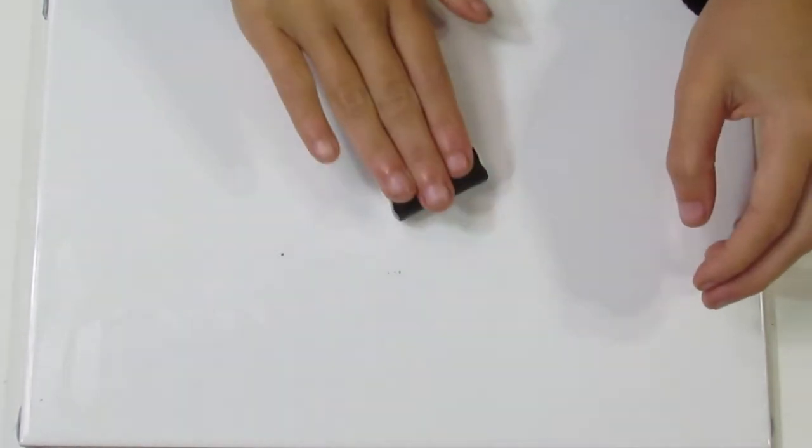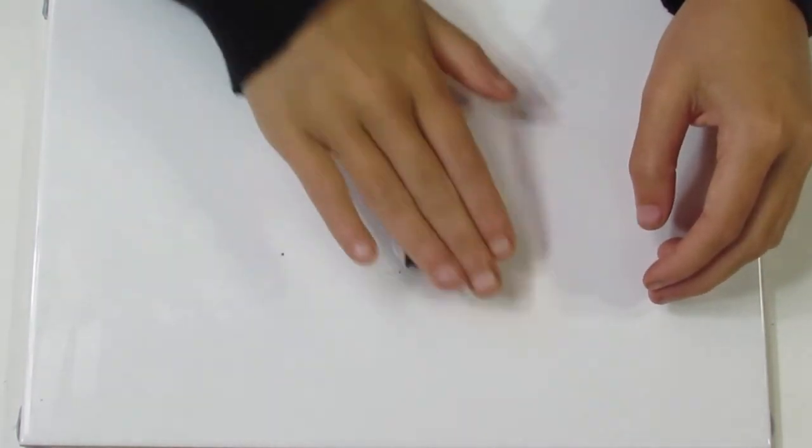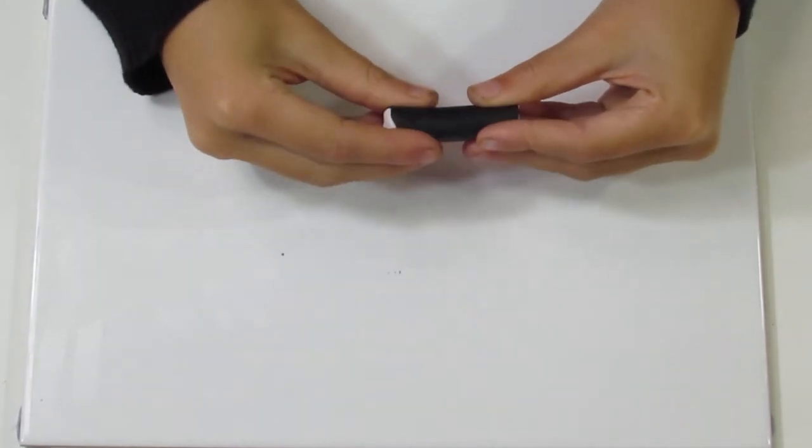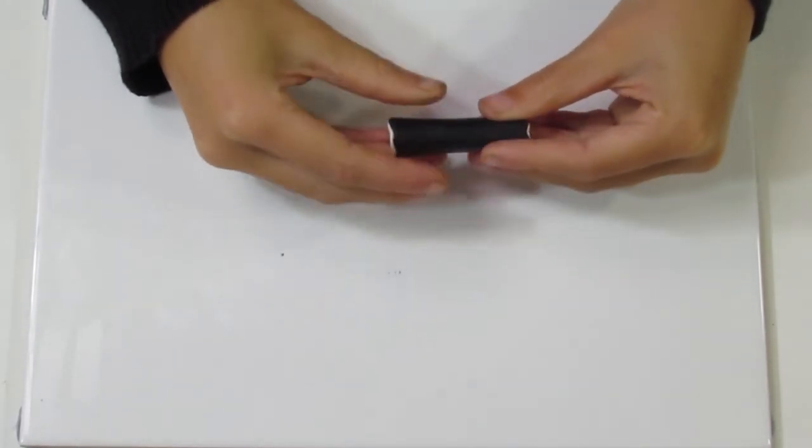And once it starts to lengthen, you can swap between rolling and pinching. And this is basically how you reduce a round cane.